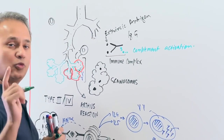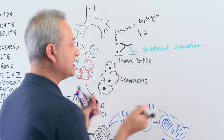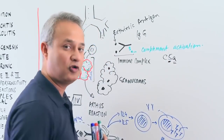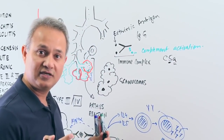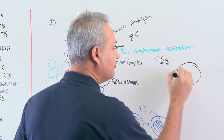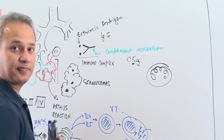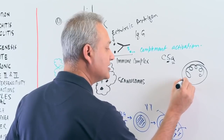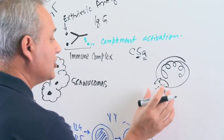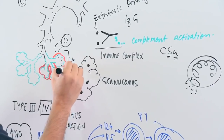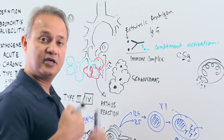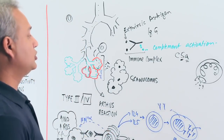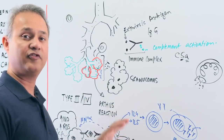Complement activation occurs, and a key complement is C5a — 'A' for activation, '5' for five-lobed nuclear cells, which are neutrophils. Neutrophils are recruited to the area and release their chemical substances, causing local inflammation. The result is scarring. As a pathologist, you see both Type 3 and Type 4 reactions occurring together.